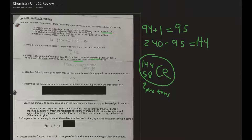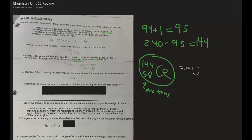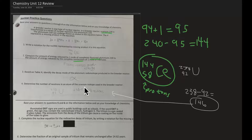Number four: determine the number of neutrons in an atom of the uranium isotope used in the breeder reactor. Uranium-238 has a mass of 238 and 92 protons. We find the difference between mass and protons to get the number of neutrons, which is 146.